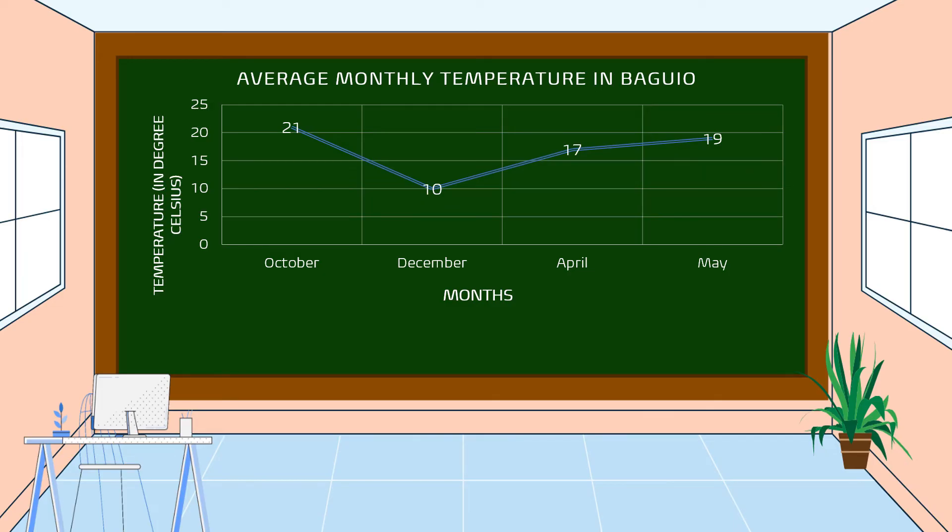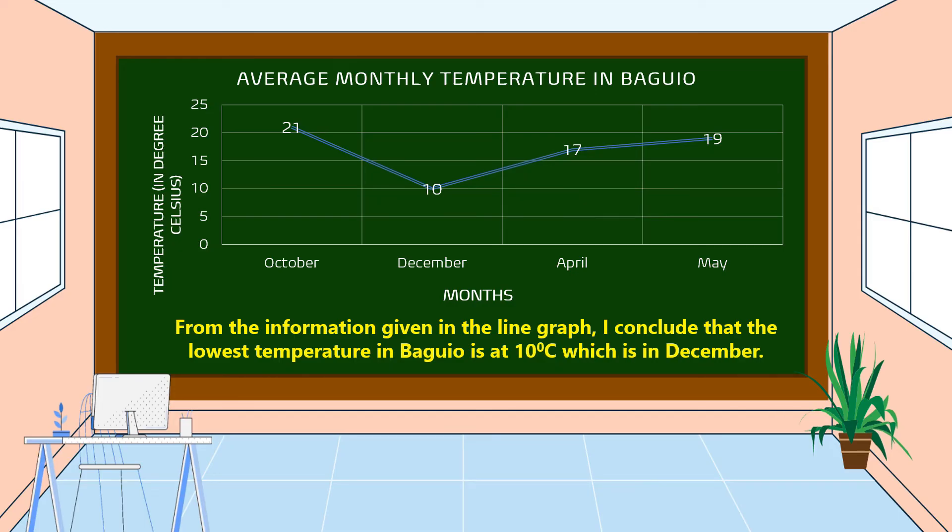Yes, we can make a conclusion or inference like this. From the information given in the line graph, I conclude that the lowest temperature in Baguio is 10 degrees Celsius, which is in December.